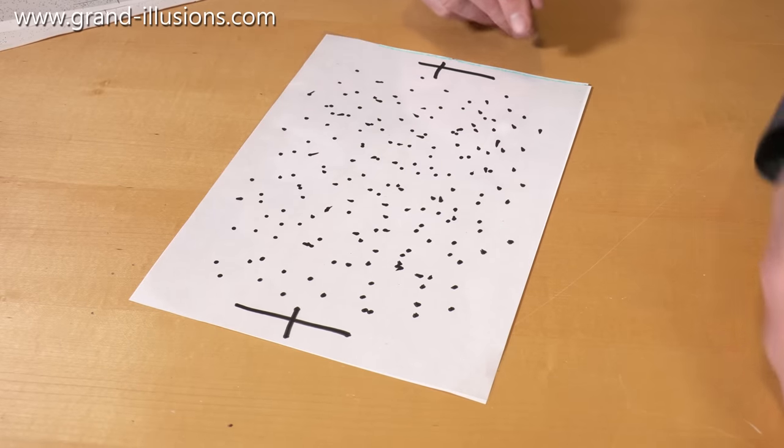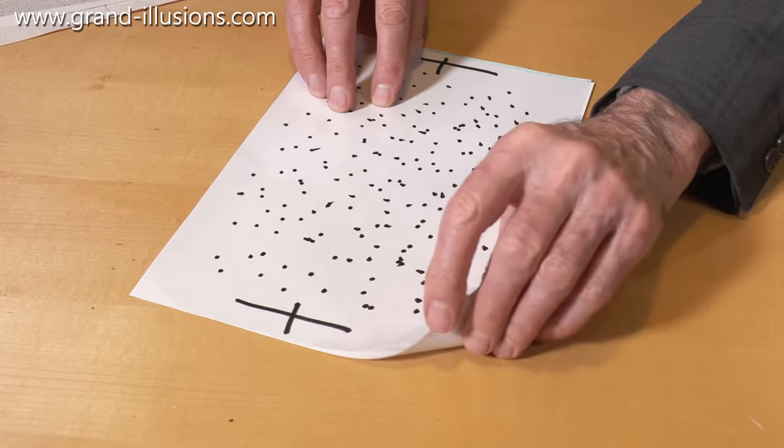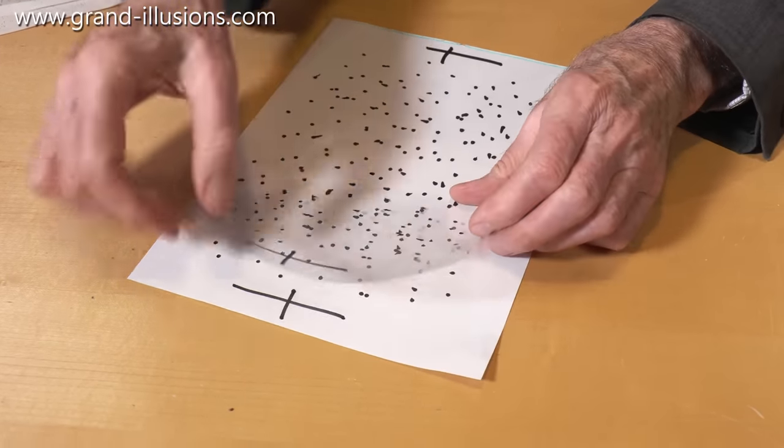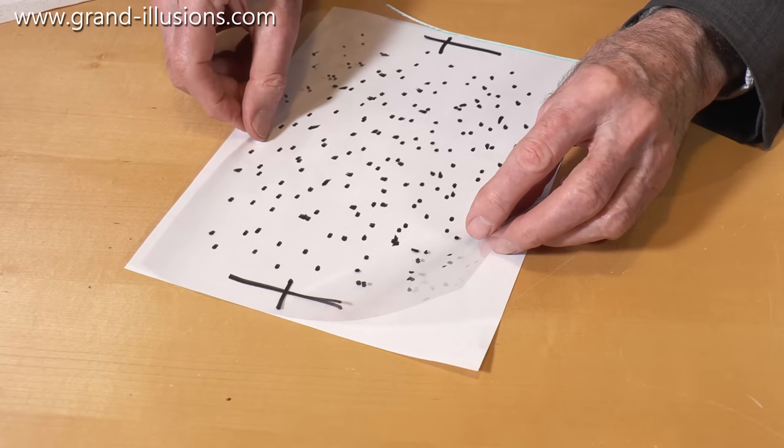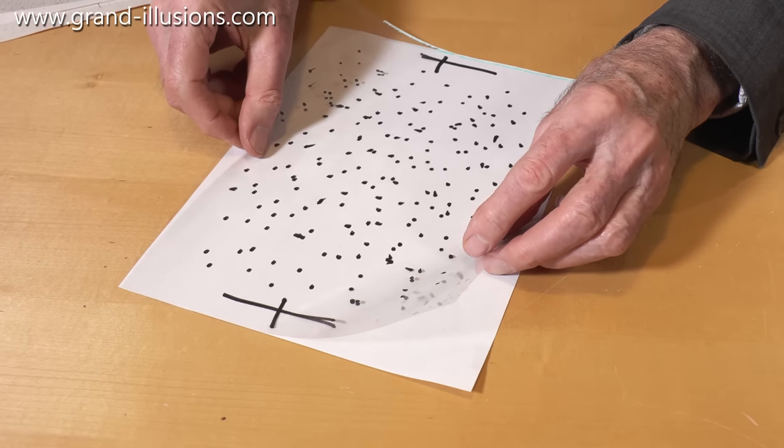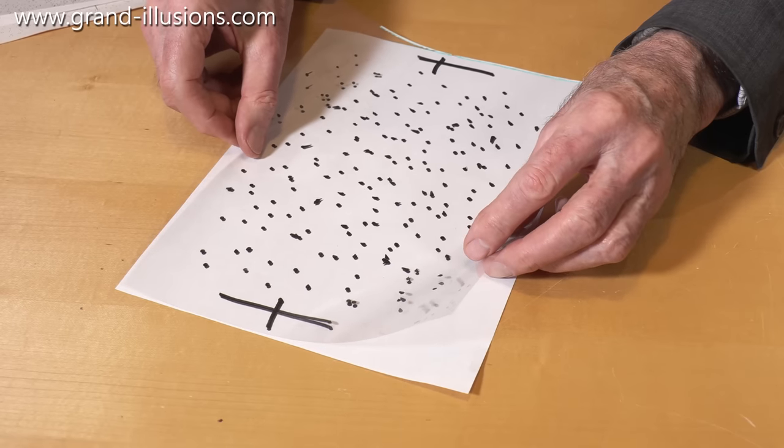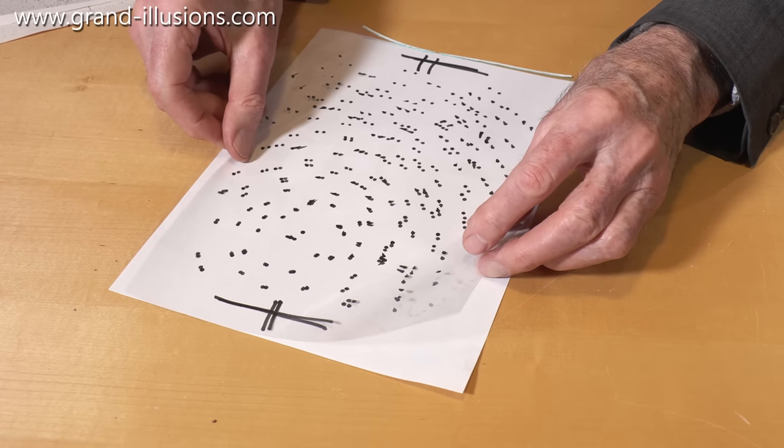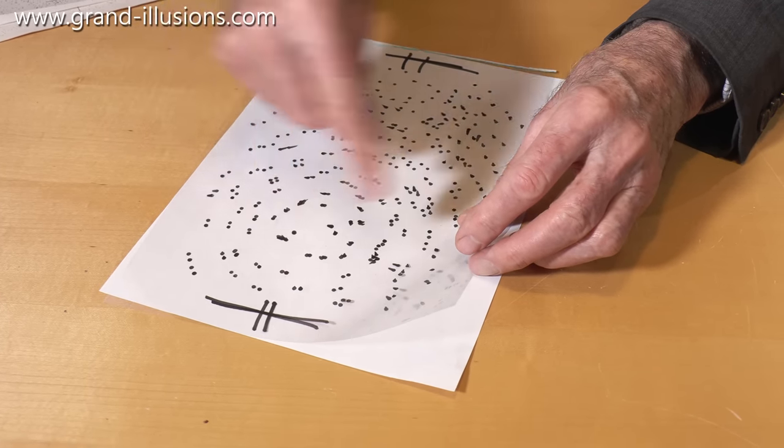When you've done that, something extraordinary happens when you start playing around with it. For instance, if I move this up here like this, upwards like that, you get some separation, which is nice, and put it down to one side. And then if I twist it, look at this.